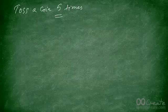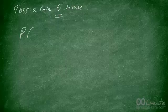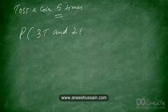Let's do a follow-up example. You're tossing a coin five times. Find the probability of getting three tails and two heads. Pause the video here and try to solve this on your own, then I'll walk through the solution.